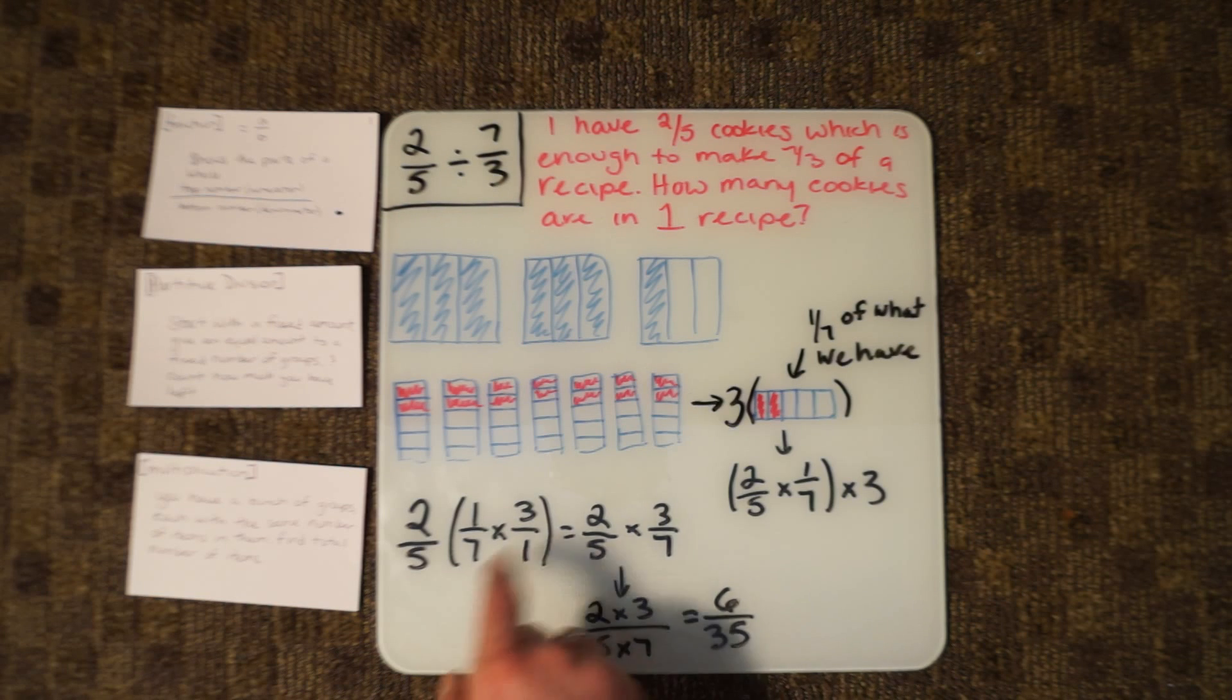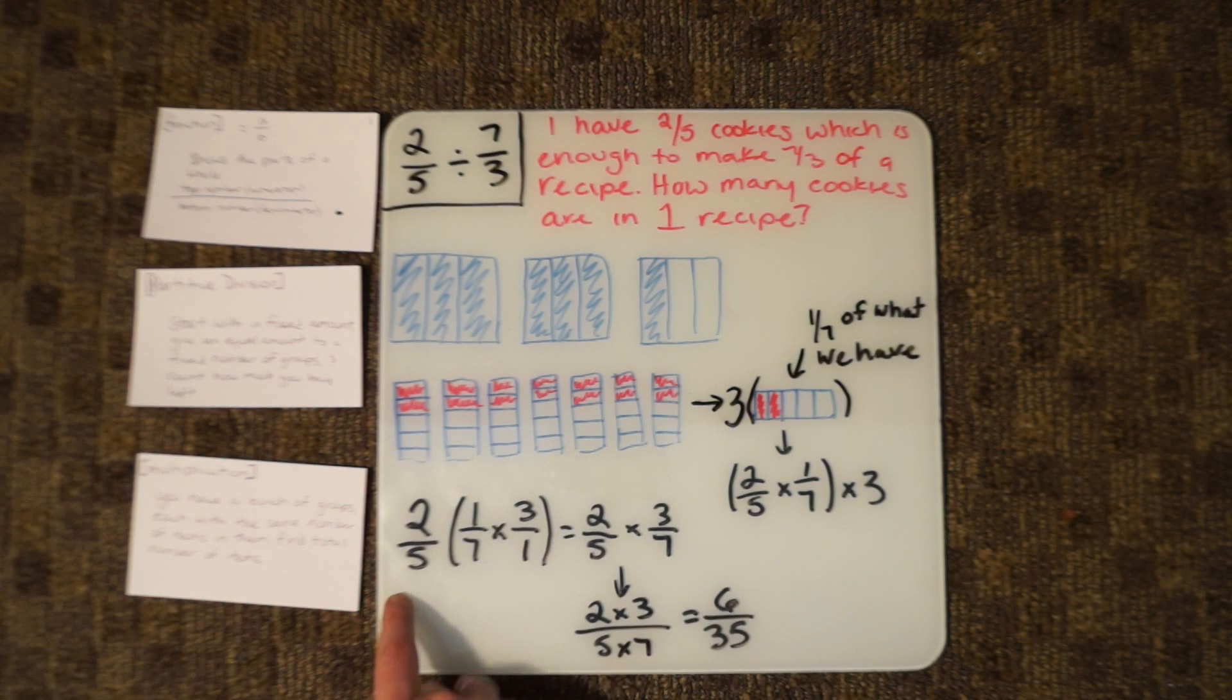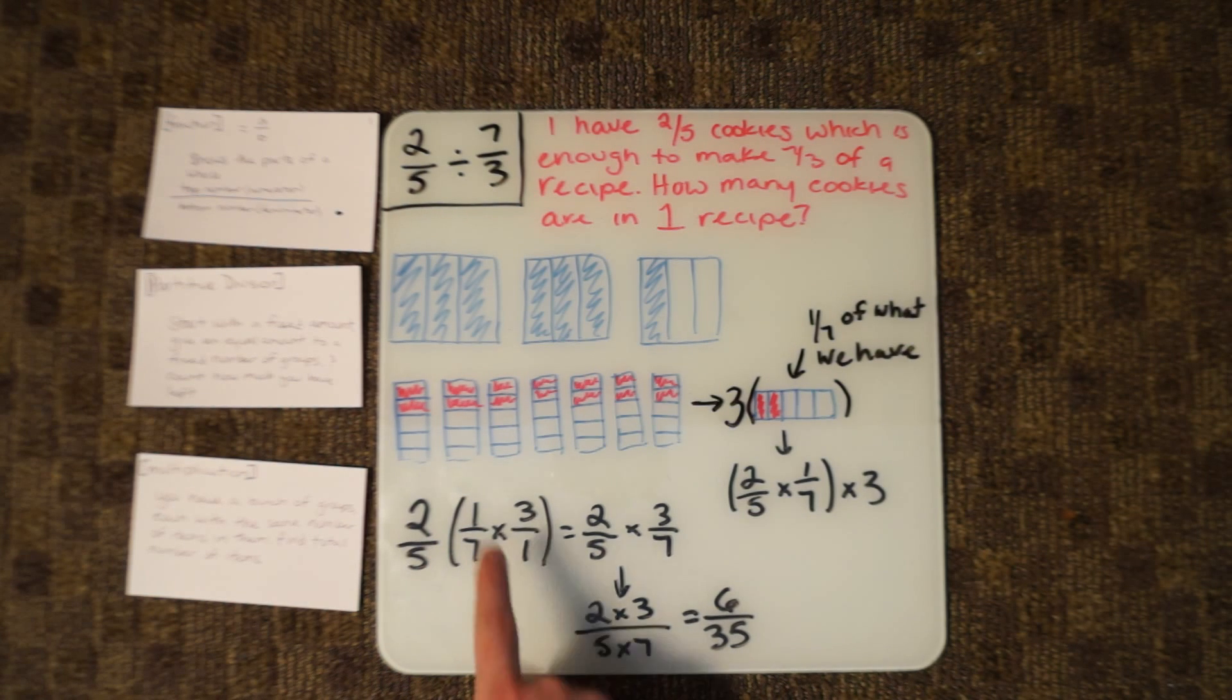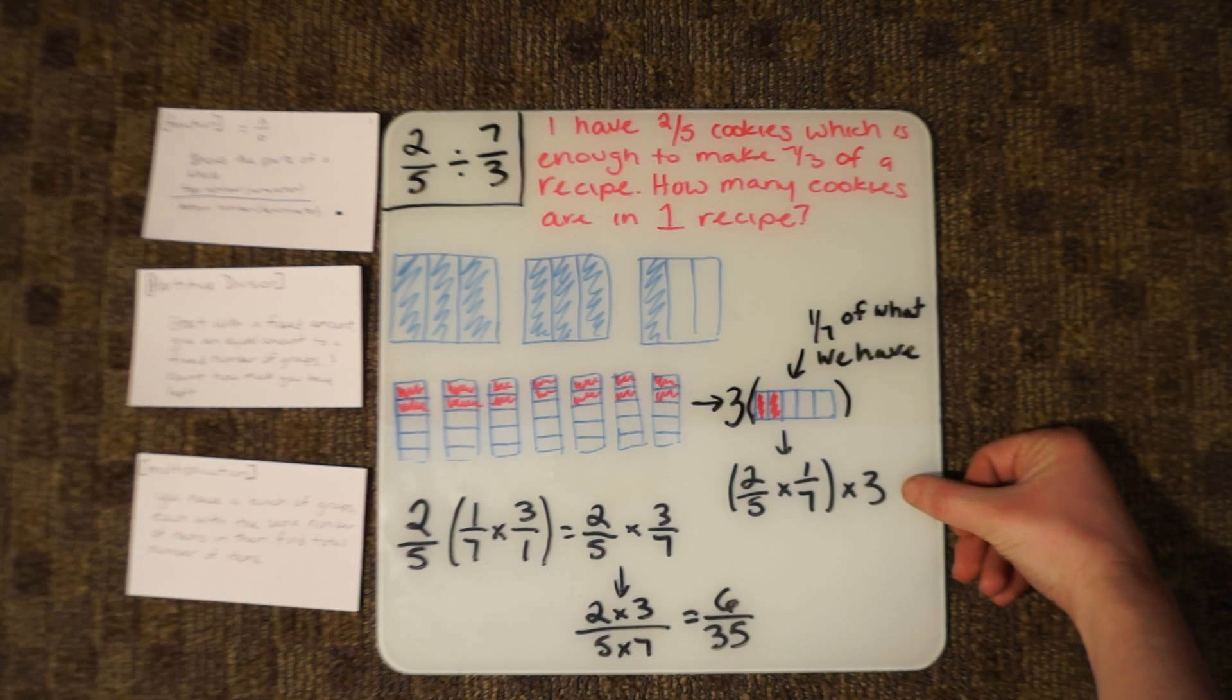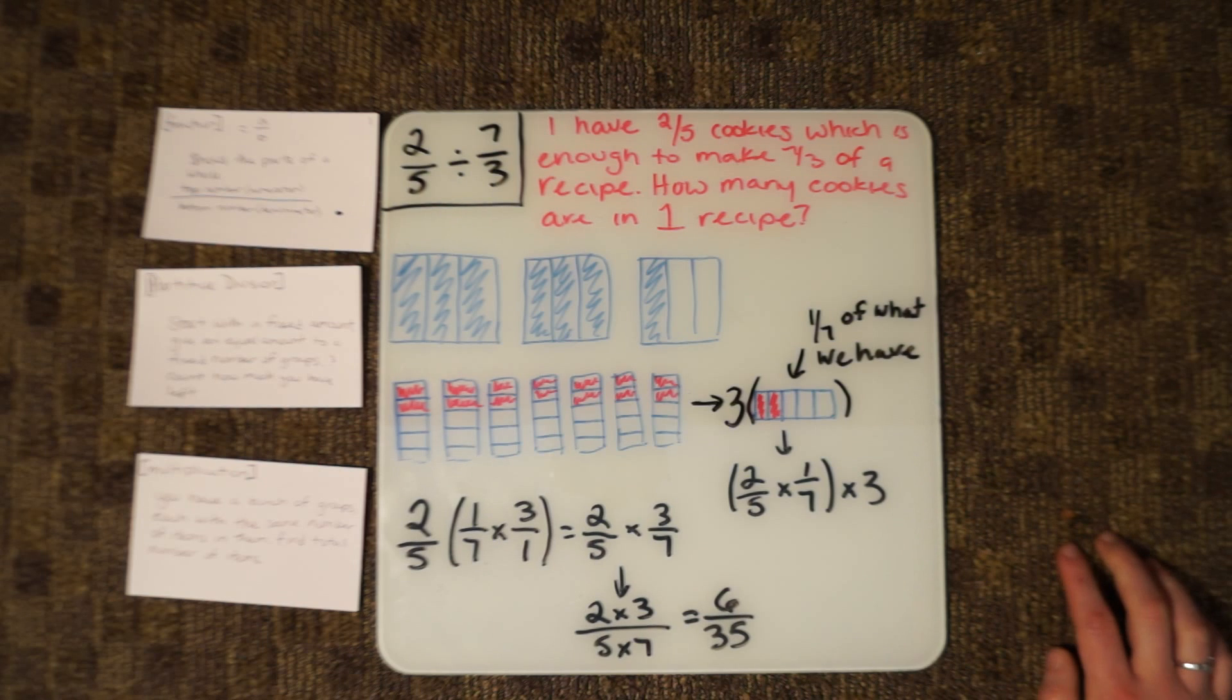You can see that can also be written as 2/5 times 1/7 times 3/1, because this 3 represents 3 whole pieces or 3 whole groups.